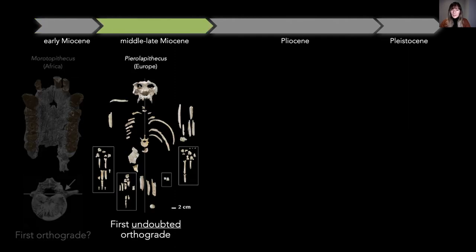To find the first species we can say is orthograde without doubts, we need to move to the middle Miocene of Europe. In Spain, we find Pierolapithecus, a partial skeleton that unites a series of traits associated with an upright body plan. Among them, Pierolapithecus also has a vertebra with a transverse process arising dorsally to the vertebral body, but also shows long and curved ribs, a long and stiff clavicle, and other features related to this body plan shared with extant hominoids.